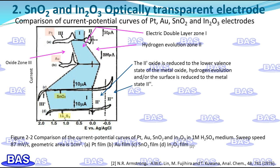These oxide films are bounded in the positive potential direction by precipitated oxygen (zone 3), and in the negative potential direction by the reduced lower valence state of the oxide to metal oxide, hydrogen precipitation, or surface reduction to the metal state. Similar to metal electrodes, delayed electrolysis at very negative potentials will produce irreversible and deleterious changes. As seen in Figure 2-2, tin oxide and indium oxide electrodes have a wider potential window for redox reactions than platinum or gold electrodes.